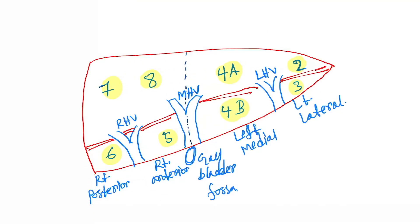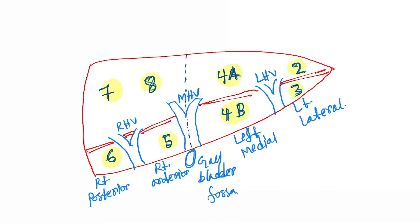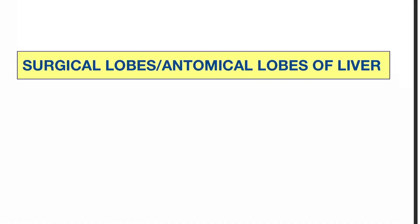So that's it, the eight functional units or eight lobes of liver: four A, four B, two and three. This classification made it easier for surgeons to do all surgeries. So that's it, the surgical lobes or anatomical lobes of liver.